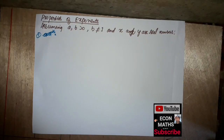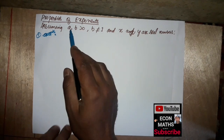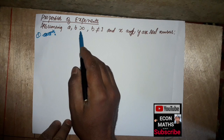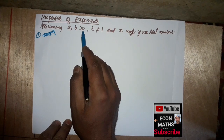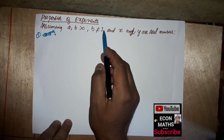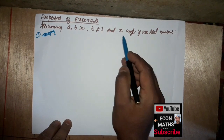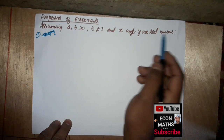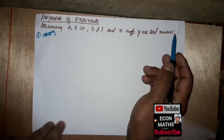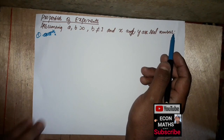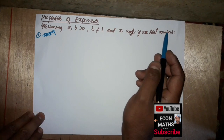In this video we will see the properties of exponents. Assuming a and b are greater than 0, b is not equal to 1, and x and y are real numbers, the properties of the exponents are as follows.